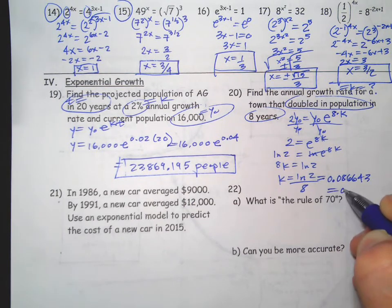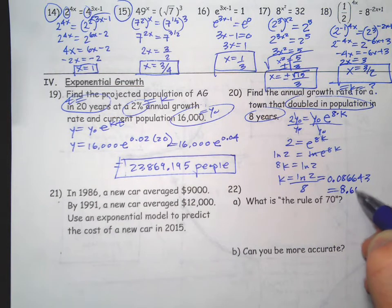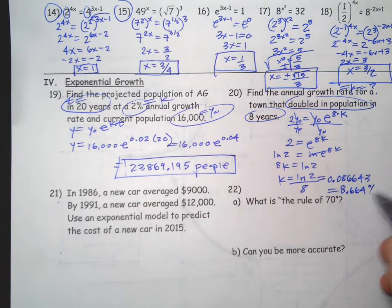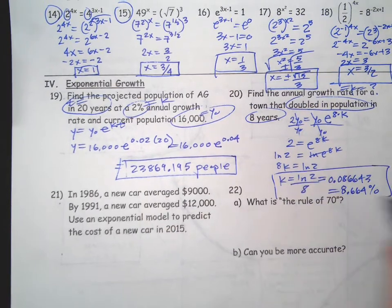So 8k equals natural log of 2, k equals natural log of 2 divided by 8, and on your calculator it's 0.086643 or 8.664 percent. So something like that.